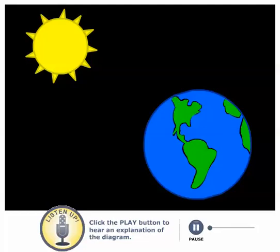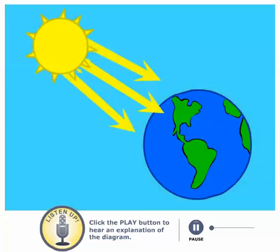This diagram explains the greenhouse effect. Basically, the greenhouse effect is when the sun emits longwave and shortwave radiation.